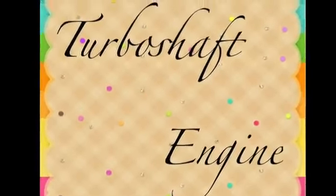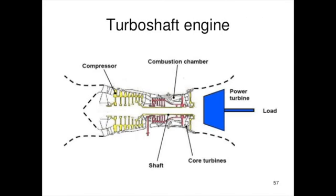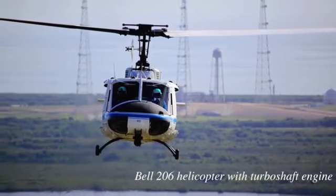The fourth type is the turboshaft. Turboshaft engines are very similar to turboprops, differing in that nearly all energy in the exhaust is extracted to spin the rotating shaft, which is used to power machinery rather than a propeller. They therefore generate little to no jet thrust and are often used to power helicopters.